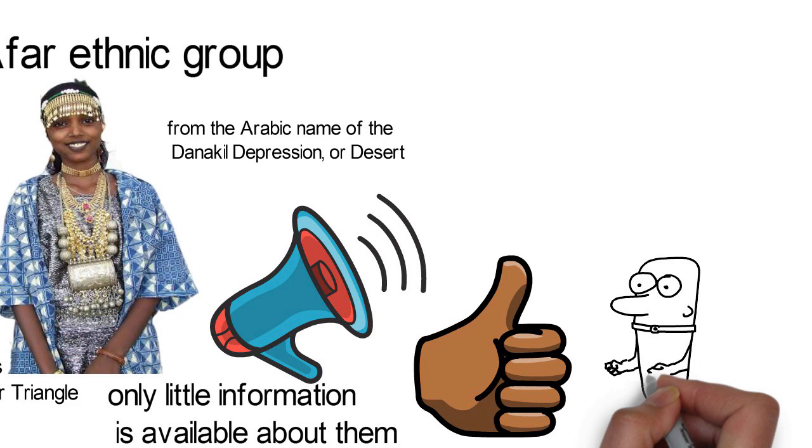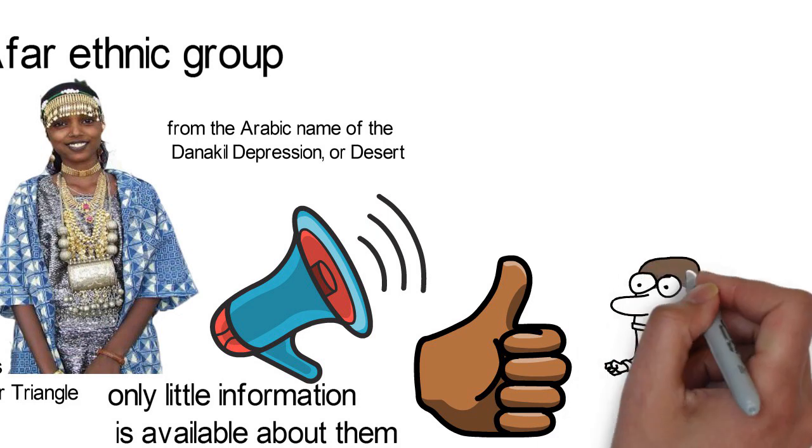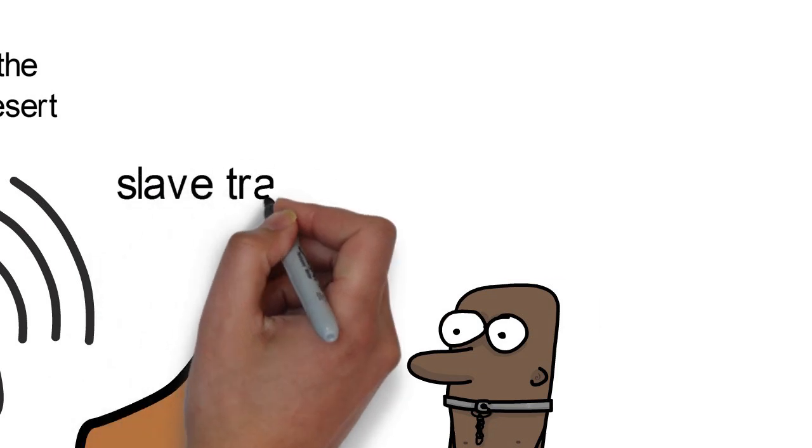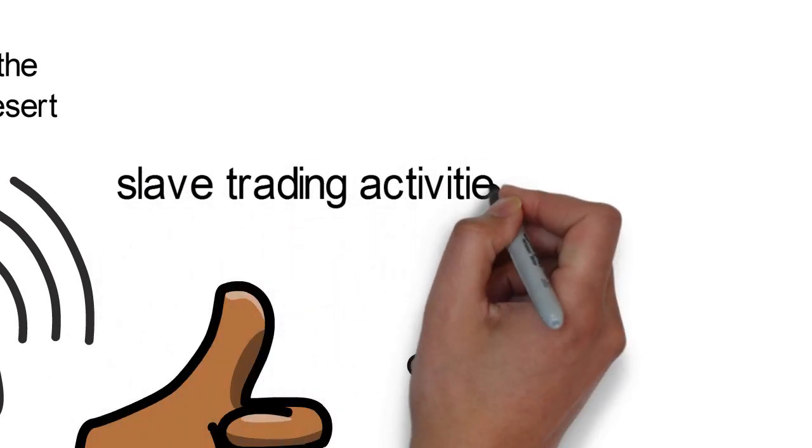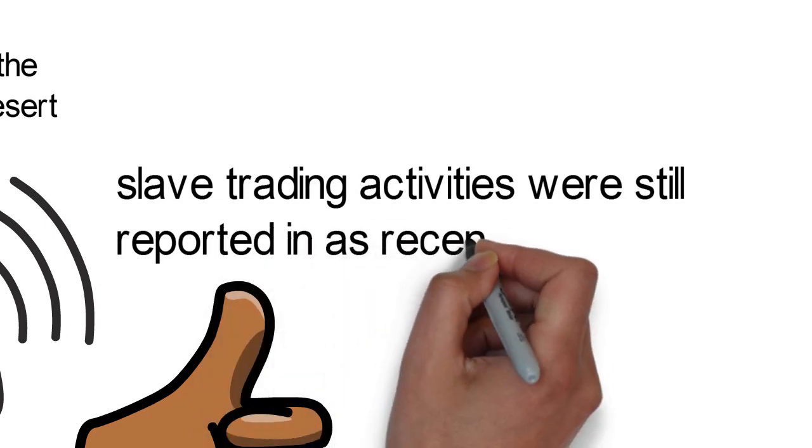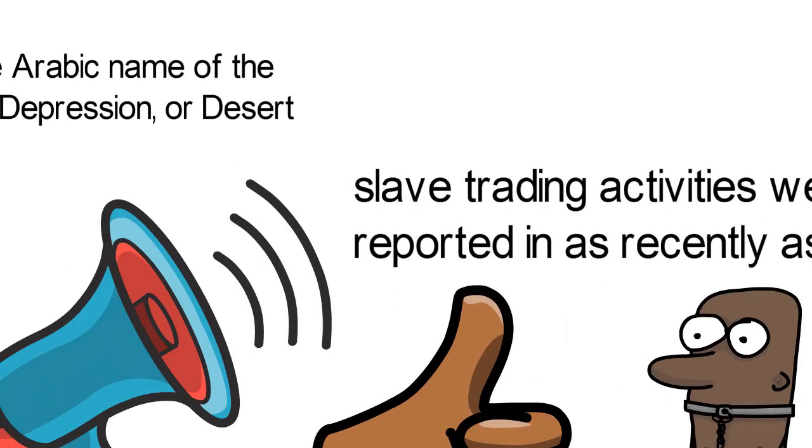The Afar were very active in the Arab slave trade, serving as guides to Arab slave traders. A major slave route to Arabia ran across the Afar country, and slave trading activities were still reported as recently as 1928.